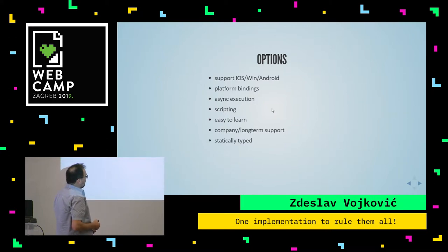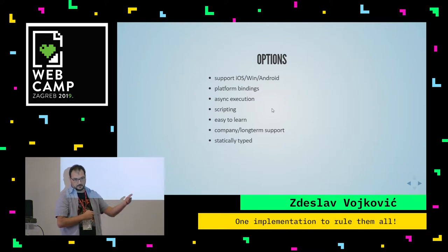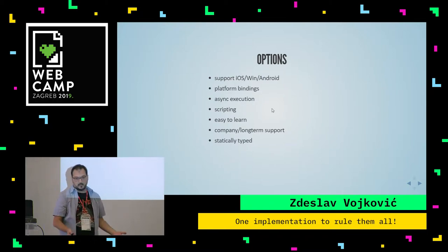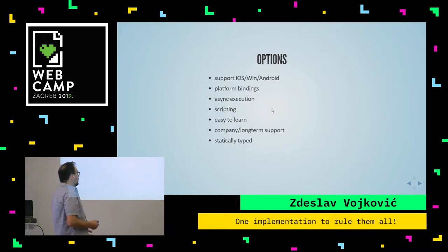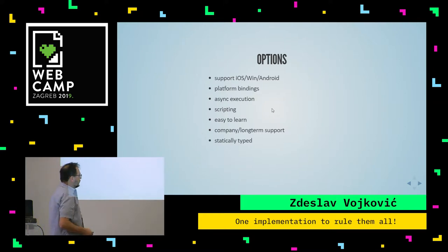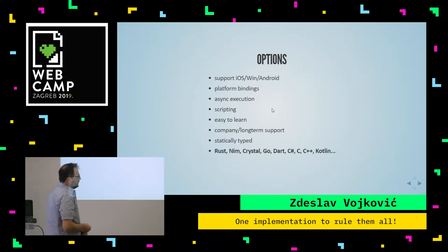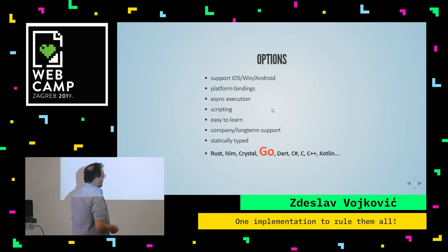With that in mind, we needed to find appropriate technology and had an extensive list of requirements. The most important were: support for all target platforms, platform bindings — we wanted technology that generates bindings between our native implementation and the target platform automatically, you don't want to write that by hand. We also wanted scripting support, easy learnability, good community or company backing, and personally I prefer statically typed languages.